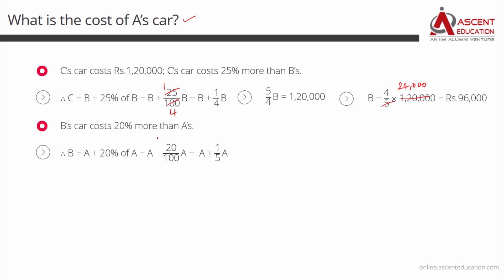B's car is costing 20 percent more than A's car. Cost of B's car is equal to whatever is the cost of A's car plus 20 percent more of it. 20 percent can be written as 20 by 100. So B is equal to A plus 20 by 100 A. 20 and 100 will cancel to leave us with 1 by 5. So B is equal to A plus 1 by 5 A. Take 5 as the common denominator. So you will get B is equal to 6 by 5 A.